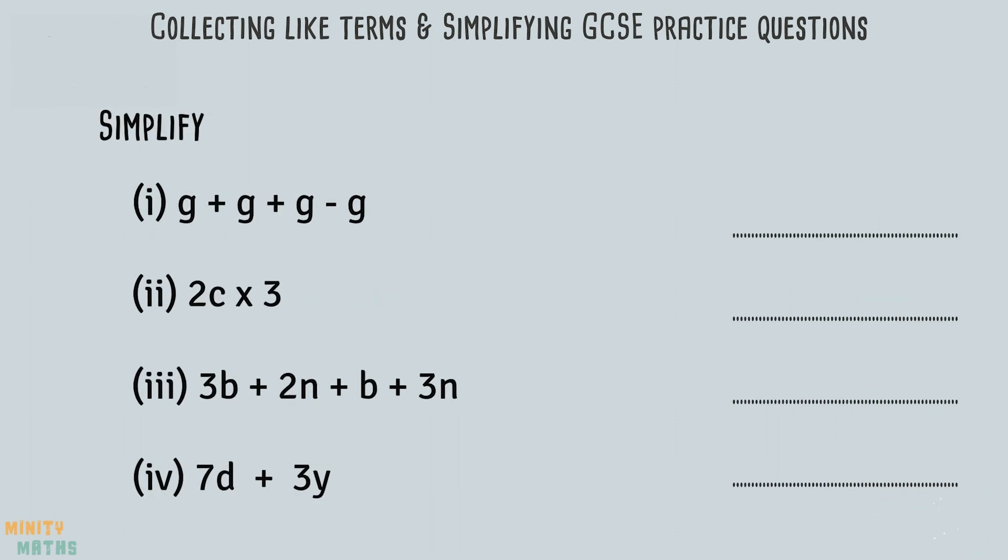For question one, notice there is a subtraction at the end of the expression. So we have 3 lots of g minus 1g. This leaves us with 2g.